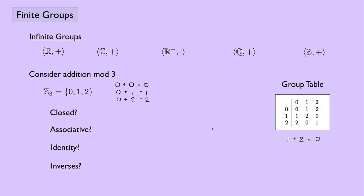Now we can ask: is this closed? Closure means you take any two elements in the set, perform the binary operation on them, and get something back in the set. We can see that everything in the table is either a 0, a 1, or a 2. So this is closed — yes.